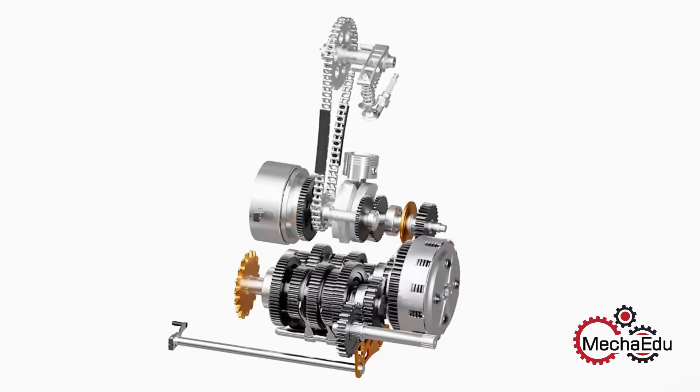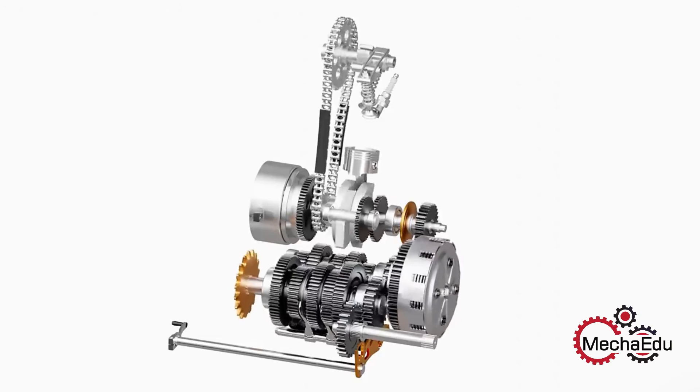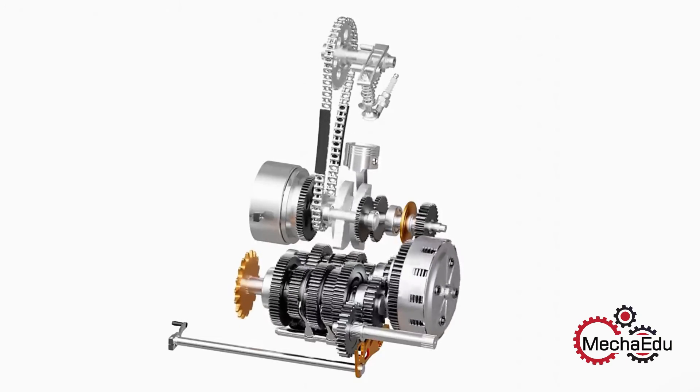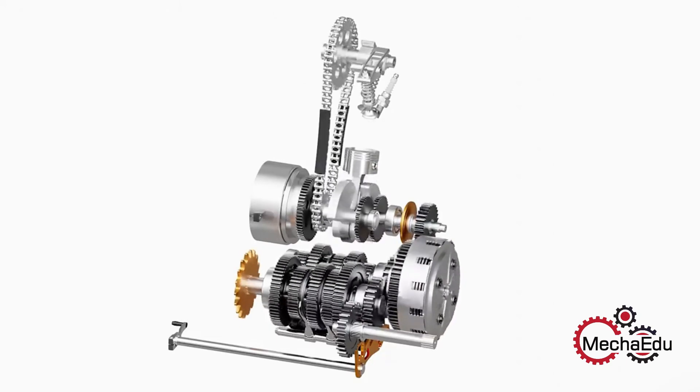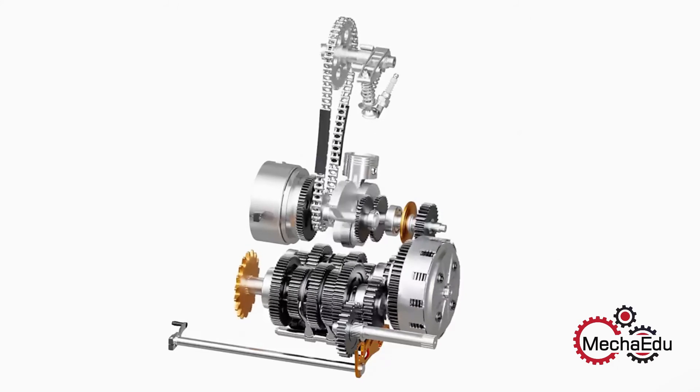The clutch helps in smooth transfer of power from the crankshaft to the transmission system. The transmission system helps in altering the speed and torque, as per our requirement.